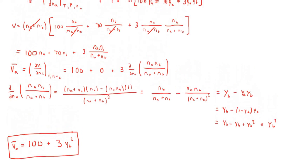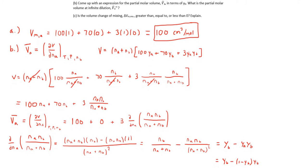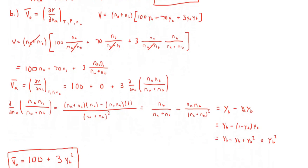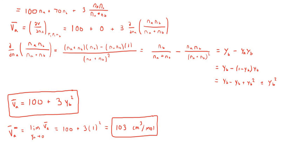Next, it asks us to find the partial molar volume at infinite dilution. To get this, we take the limit of the partial molar volume of A as YA goes to 0, which means YB goes to 1. So we plug in 1 for YB in the expression. The final answer for the partial molar volume of A at infinite dilution is 103 centimeters cubed per mole.